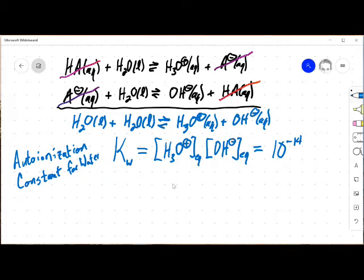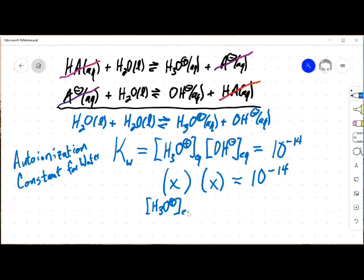So if I just call that x and that x, 10 to the minus 14th. So x, the H3O+ concentration at equilibrium is equal to the OH- concentration at equilibrium, and those are both equal to 10 to the minus 7th.